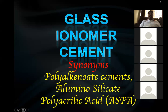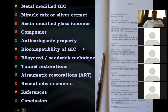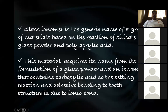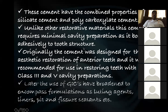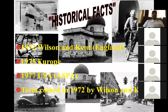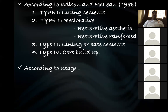Other names include aluminum silicate polyacrylic acid cement. GAC was introduced by the famous scientists Wilson and Kent in 1972.